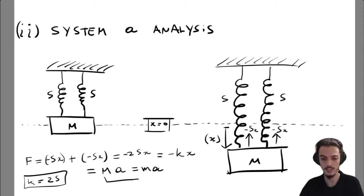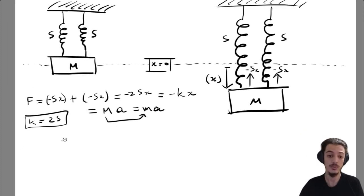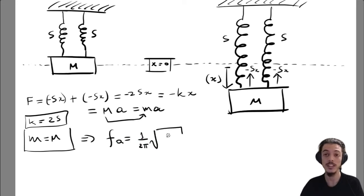And this guy here is a little mass m. So we can directly write that with this identification, we can directly write that the natural frequency of the system a is one divided by 2π times the square root of k divided by little m. In this case, k is equal to 2s and in this case little m is equal to big M.